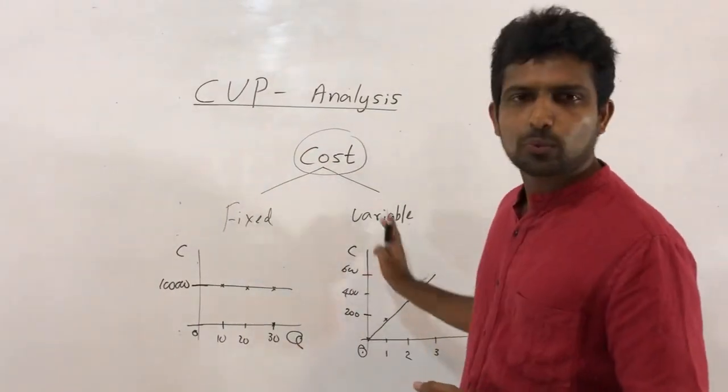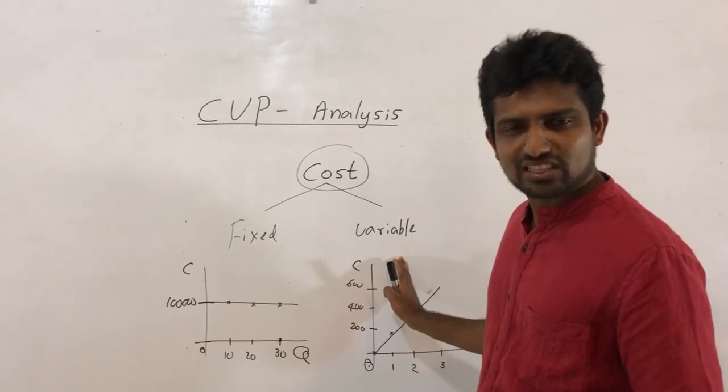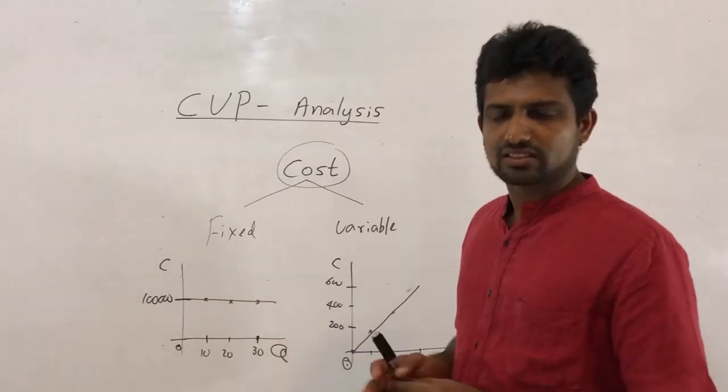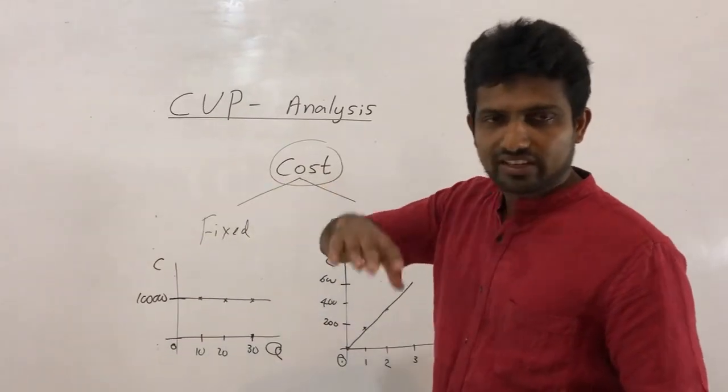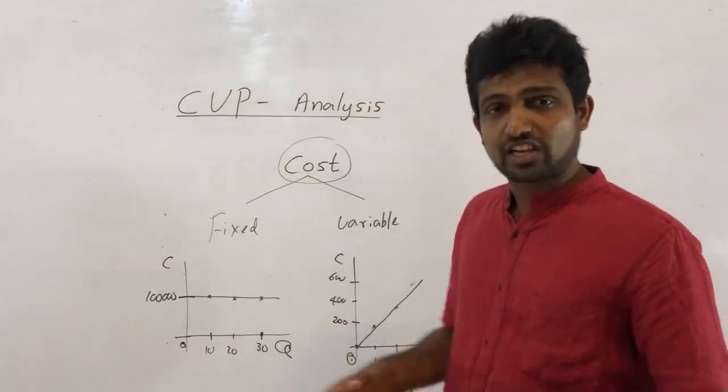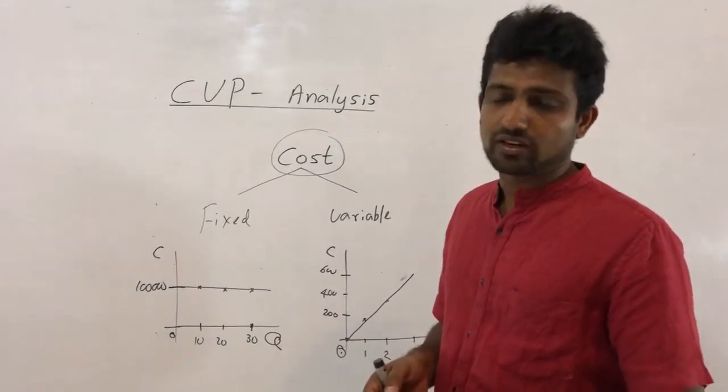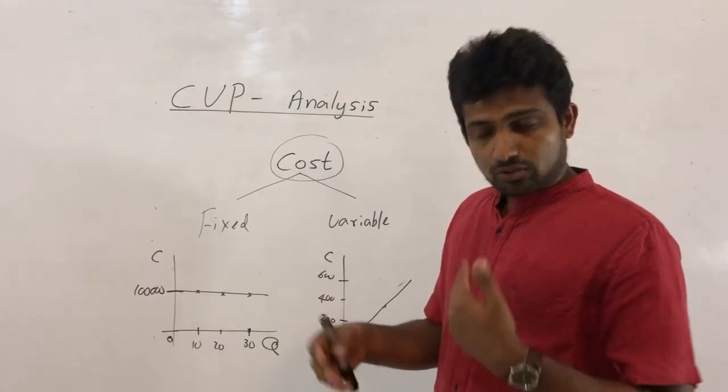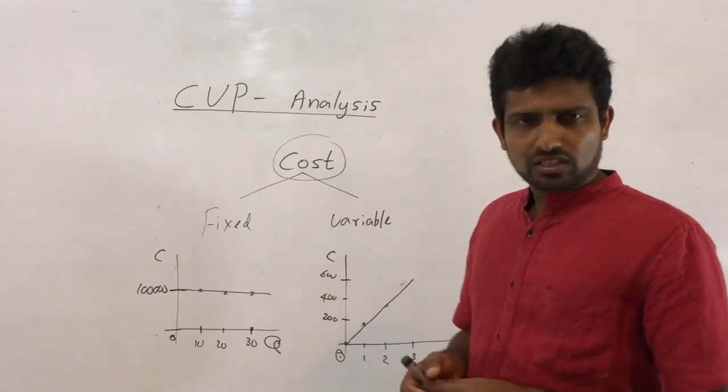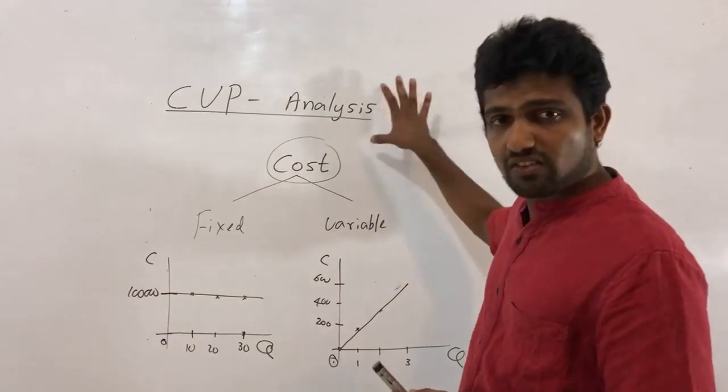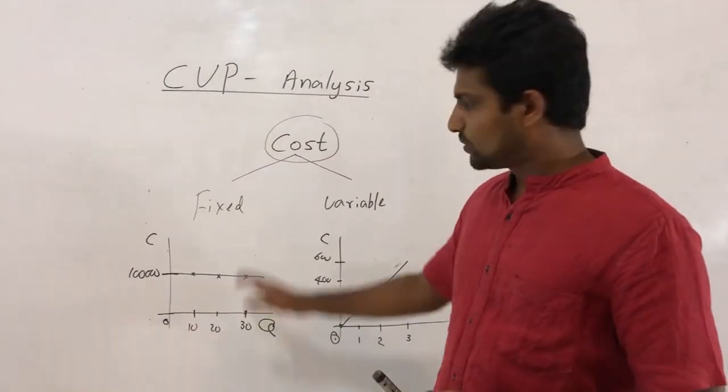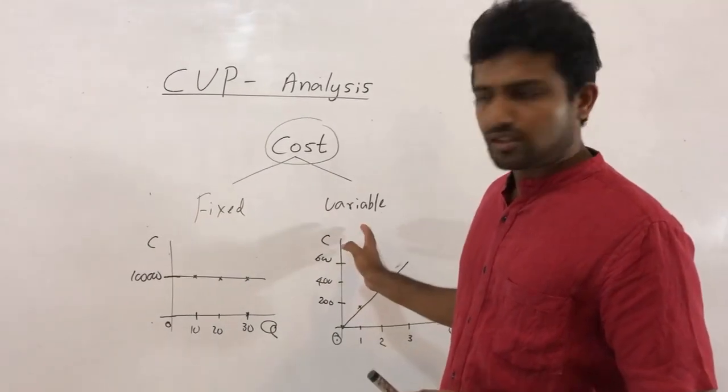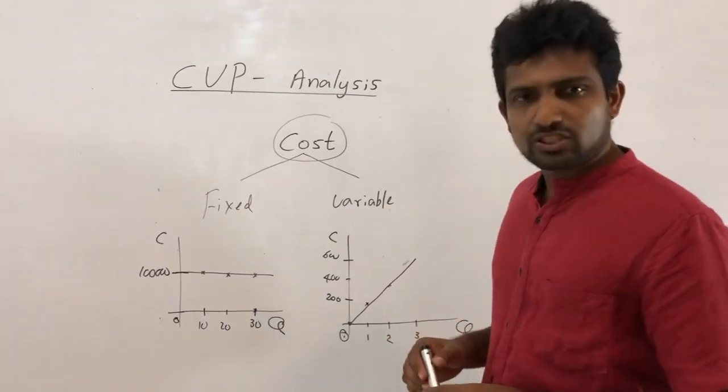But in this lesson, CVP analysis, we take electricity as fixed. Why? You must categorize all the cost as either fixed or variable. You are not allowed to use other type of classification for this. But in management accounting, there are different types of costs, around 10 classifications. But here in this lesson, CVP analysis, we see all costs can be categorized into either fixed or variable.